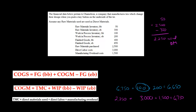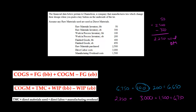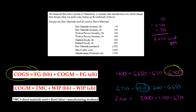Now we can calculate cost of goods sold, because we know COGM is $6,650. We plug that in, along with the finished goods beginning and ending balances given in our data. Finished goods beginning balance is $400, plus $6,650 cost of goods manufactured, minus $650 finished goods ending balance — that gives us $6,400. That is our cost of goods sold. When this manufacturing company puts together their income statement, they'll subtract this $6,400 from revenues to get gross profit.